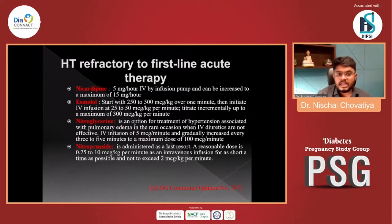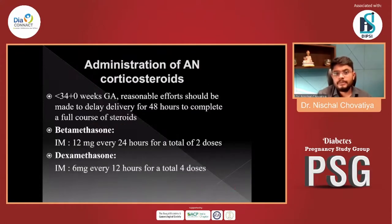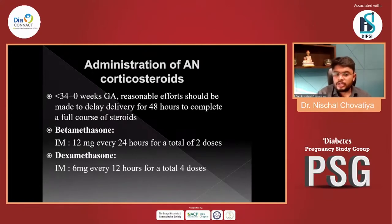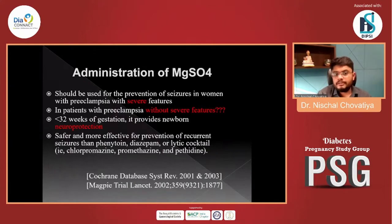Regarding corticosteroids: these are given for pulmonary maturation, as colleagues are aware. Magnesium sulfate is used as a preventive measure to prevent convulsions and seizures in the woman.